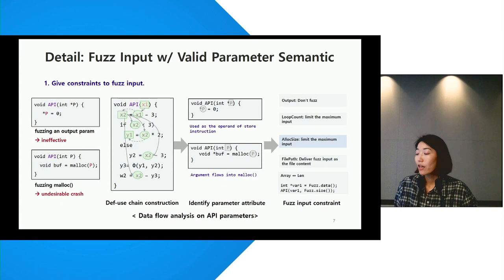For instance, if the argument is used for memory allocation, we limit the maximum value of the fuzzing input.